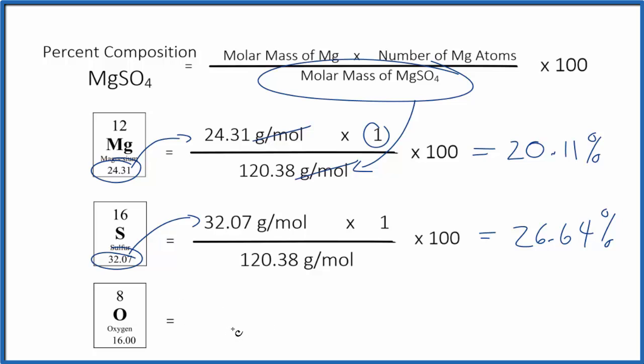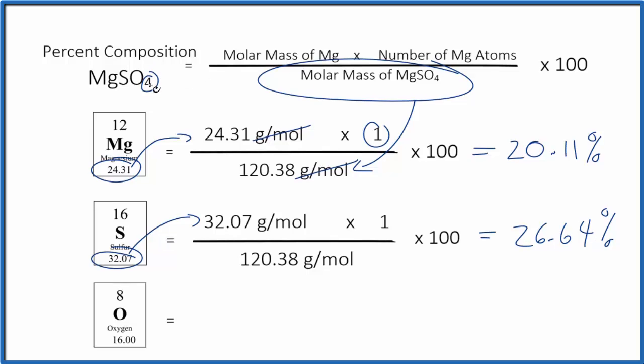Pause and figure out the percent composition for the oxygen in MgSO4. Be careful, we have four of these oxygen atoms.